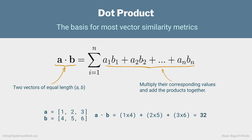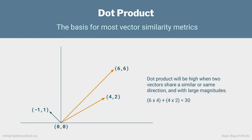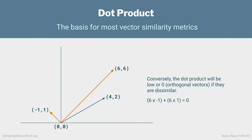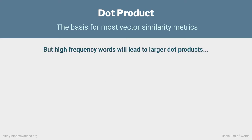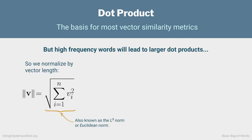Going back to our earlier graph, the dot product between the two similar vectors is 30, while the dot product between the two dissimilar vectors is 0. So now we have a way to measure similarity, but we want to take an extra step. If we're using word frequencies, higher frequencies are going to lead to larger dot products, which means longer documents will tend to be favored. So we take the additional step of normalizing using vector length. To get a vector's length, you simply square each component of the vector, add the results together, then take the square root — also known as the L2 or Euclidean norm.